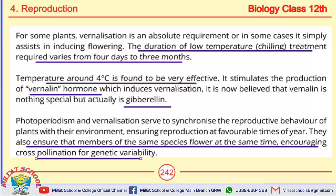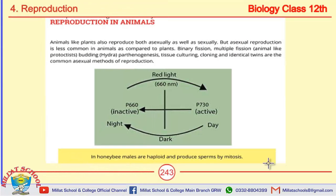The next topic is reproduction in animals. Animals, like plants, reproduce both sexually and asexually, but asexual reproduction is less common in animals compared to plants. An important MCQ point: in asexual reproduction in honeybees, males are haploid and produce sperm by mitosis.